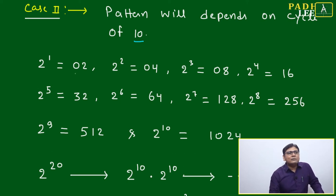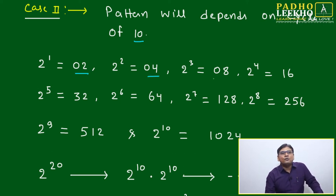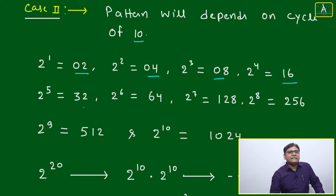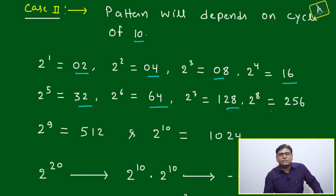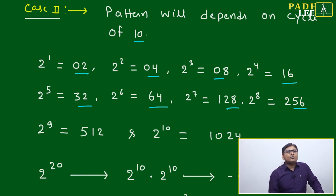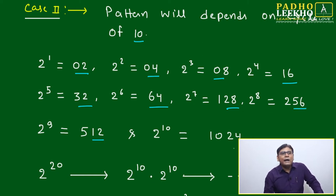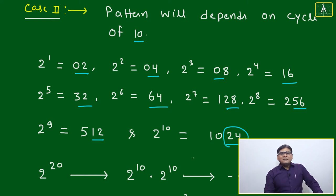Let's list the last two digits of powers of 2: 2 to the power 1 is 02, 2 squared is 04, 2 cubed is 08, 2 to the power 4 is 16, 2 to the power 5 is 32, 2 to the power 6 is 64, 2 to the power 7 is 128 (last two digits 28), 2 to the power 8 is 56, 2 to the power 9 is 12, and 2 to the power 10 is 24.